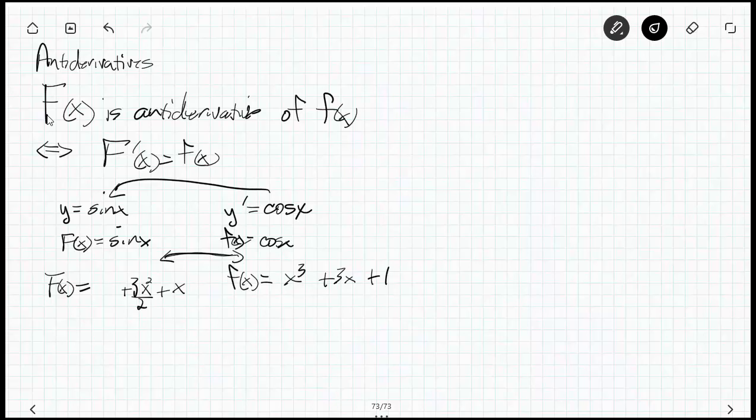How about the last term? How about X cubed? I know that it's going to be X to the 4th, because the derivative of X to the 4th produces an X cubed. When I take the derivative of this, I need the 4 to cancel. So I divide by 4. This is a single antiderivative of this function.